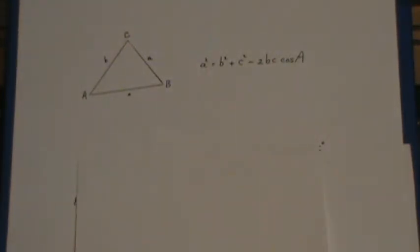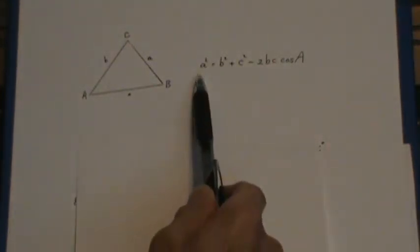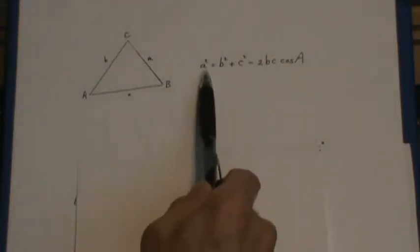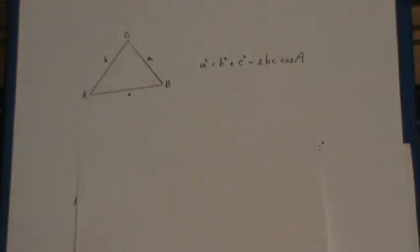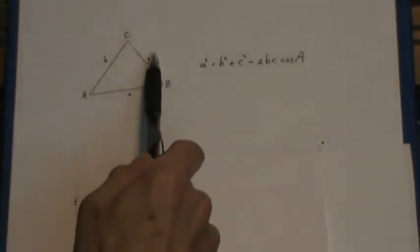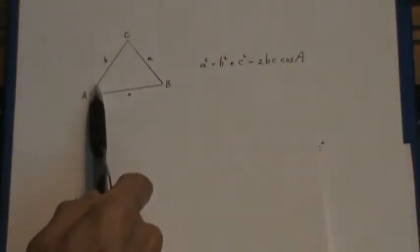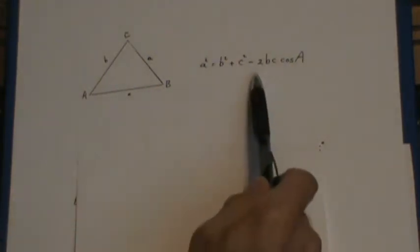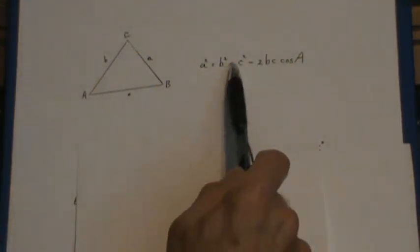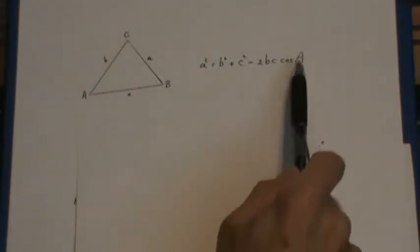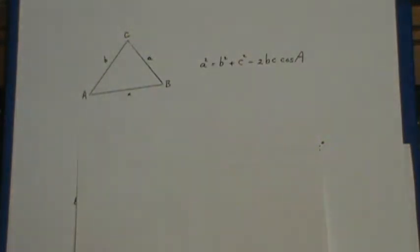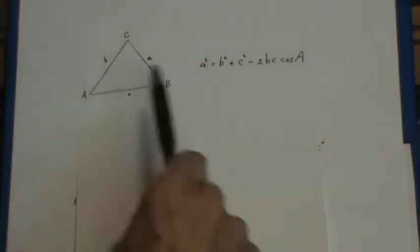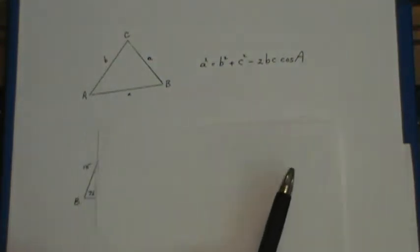Now the cosine law to me is sort of an extension of the Pythagorean theorem. You see the a squared equals b squared plus c squared is the Pythagorean theorem, and if there was a right angle across from little a, that would be all you need. So this two times these two sides times the cosine of the angle opposite a is kind of an adjustment factor on the end to take care of cases where the capital A is not a right angle.